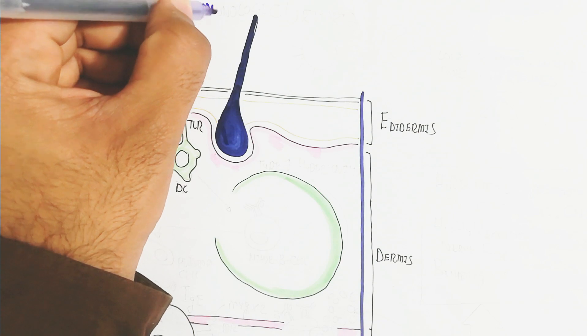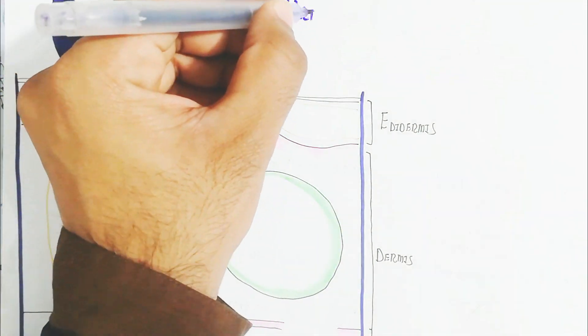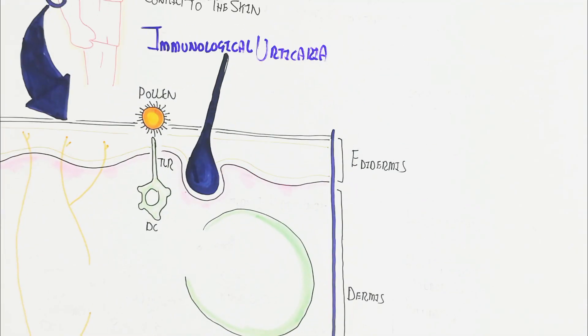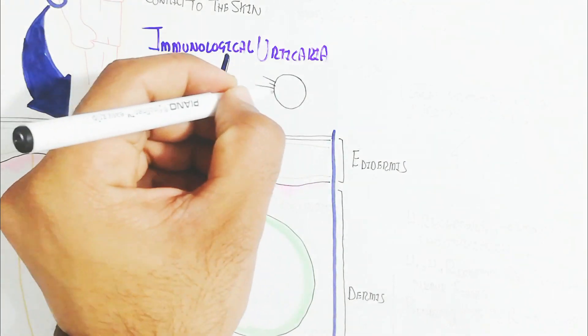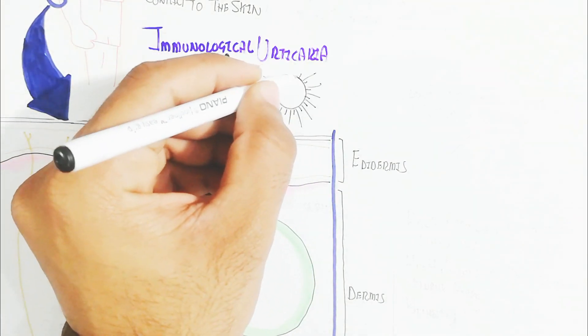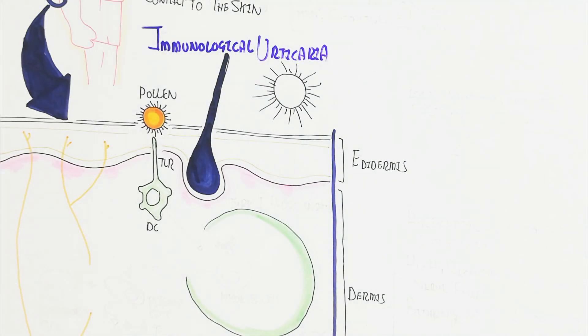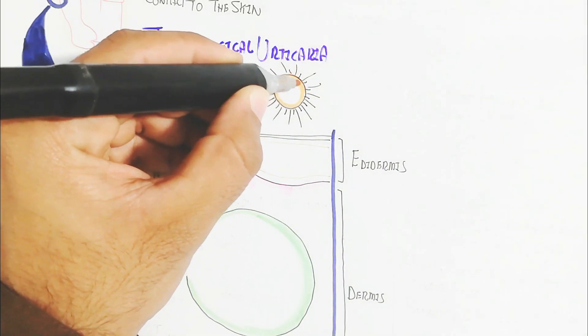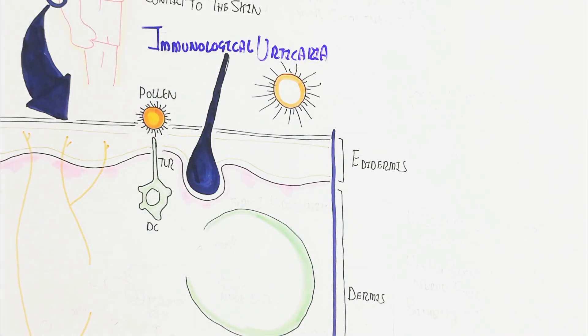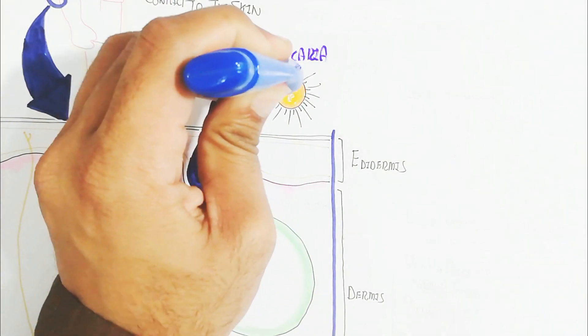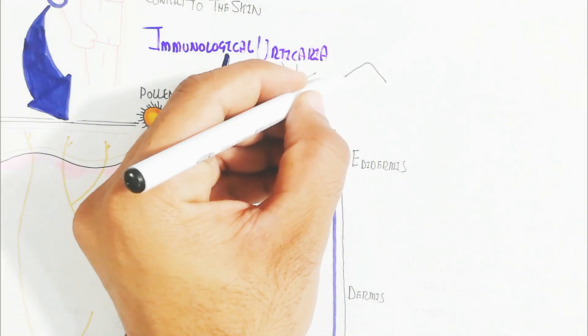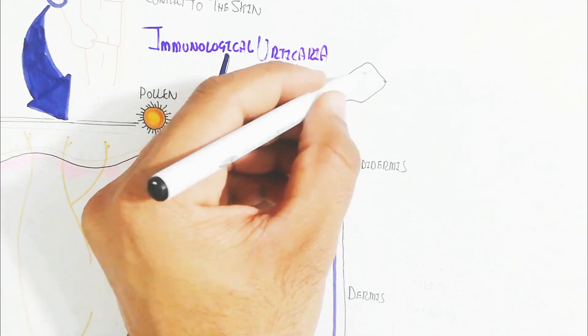This is the pollen contact and toll-like receptor for the dendritic cell. After recognition as an antigen, it will move into the naive B cell. But remember, UVB which is especially called urticaria, or on the other hand, a lot of chemicals are involved.